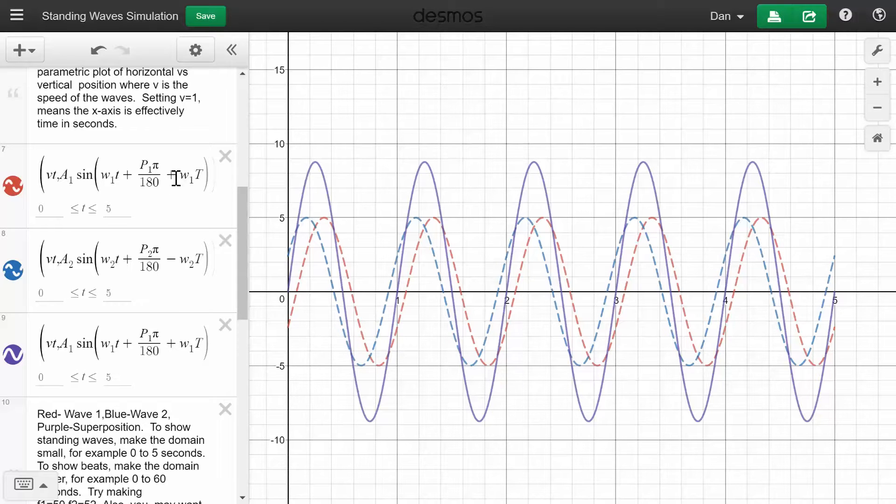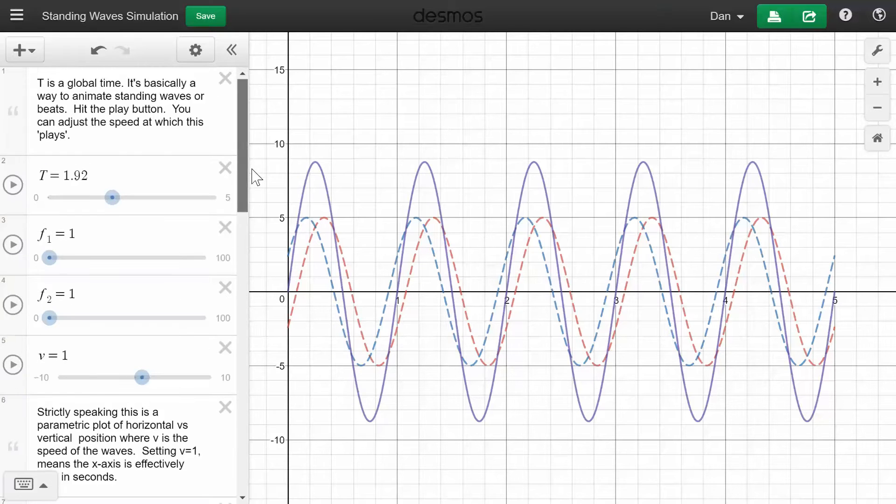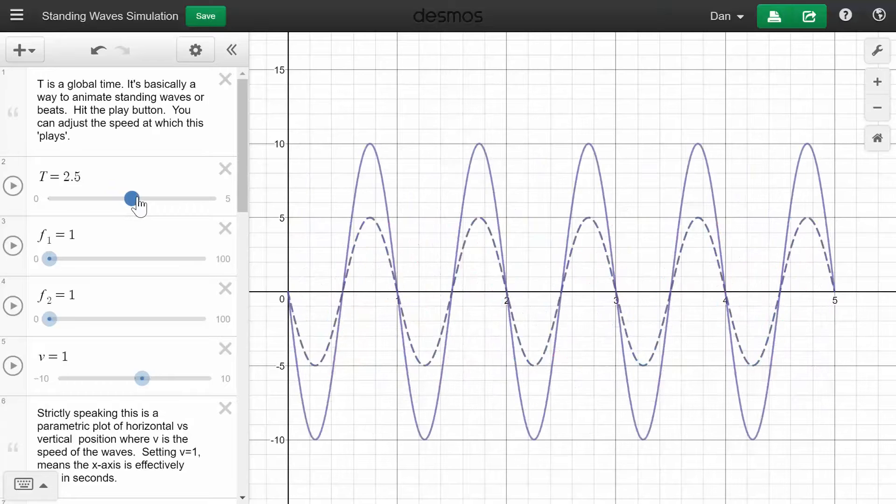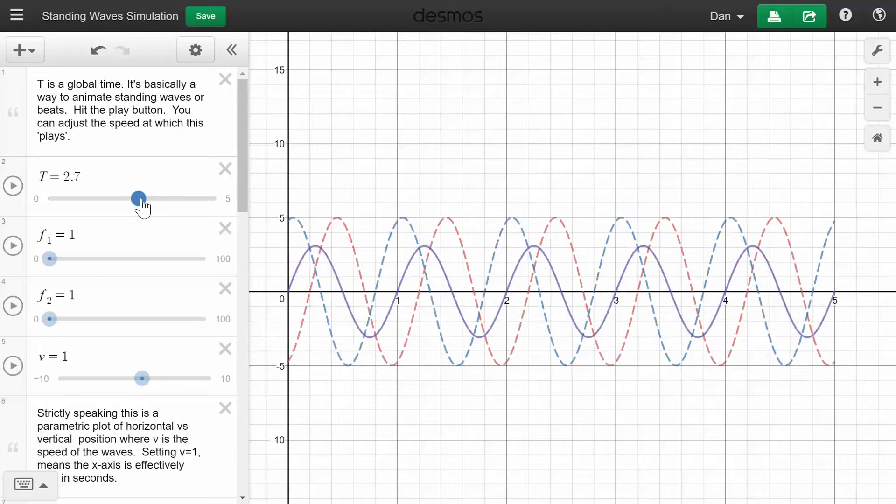I'm being a little sneaky in that I'm adding a capital T here, which is the global time variable. And by changing that, that allows me to basically show what it would look like at a later moment in time.